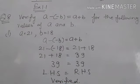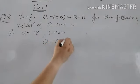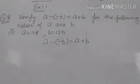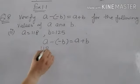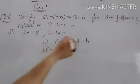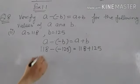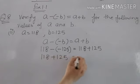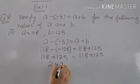Very fine — that was the first part of question number 8. Now for the second part, we take the statement again: a minus minus b equals a plus b. We put a equals 118 and b equals 125. For LHS: 118 minus minus 125. For RHS: 118 plus 125. Solving this, 118 minus minus 125 equals 118 plus 125.